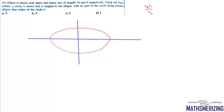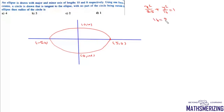The ellipse equation is x²/25 + y²/16 = 1, with vertices at (5,0), (-5,0), (0,4), and (0,-4). Finding eccentricity: 16 = 25(1 - e²), so e = 3/5. The foci are at (±ae, 0) = (±3, 0).